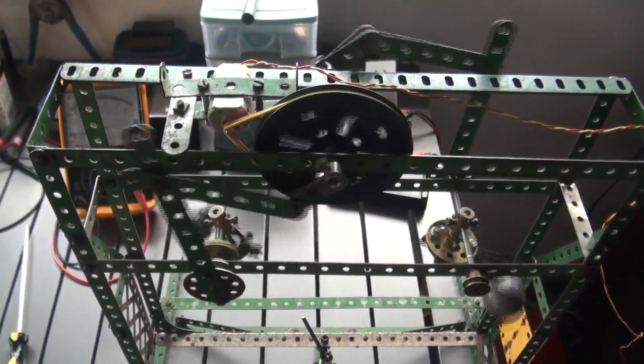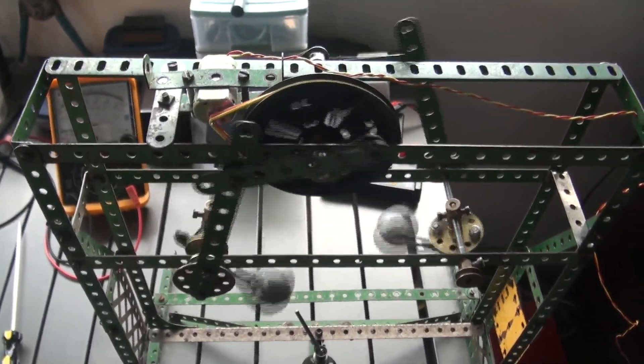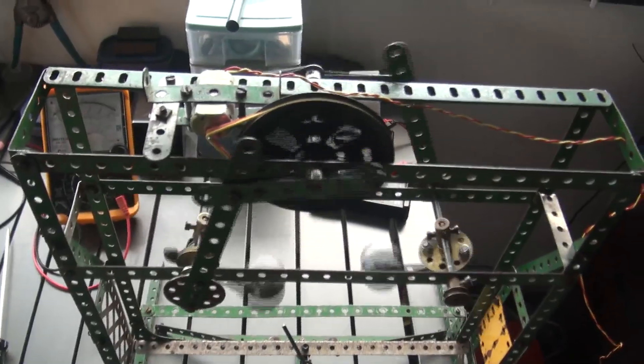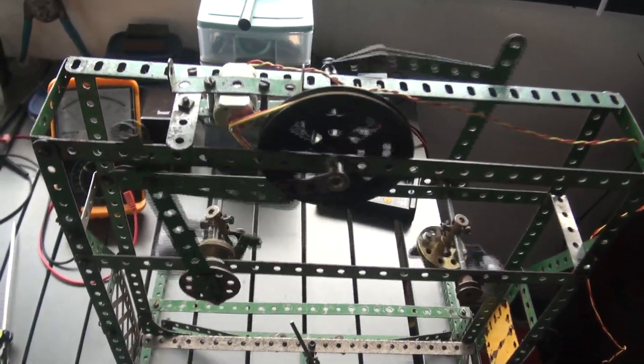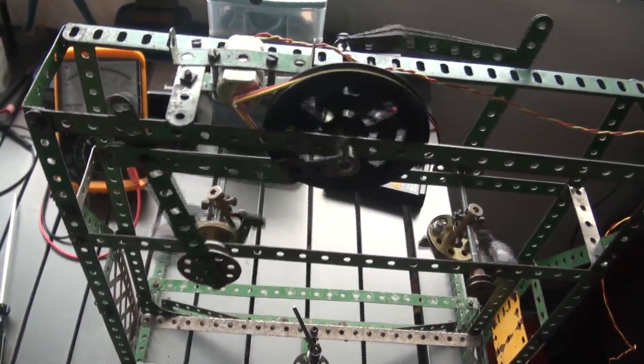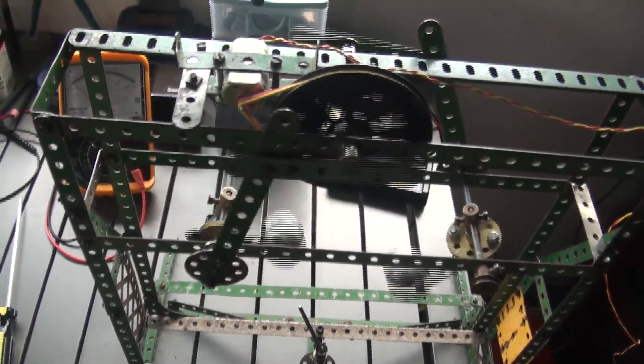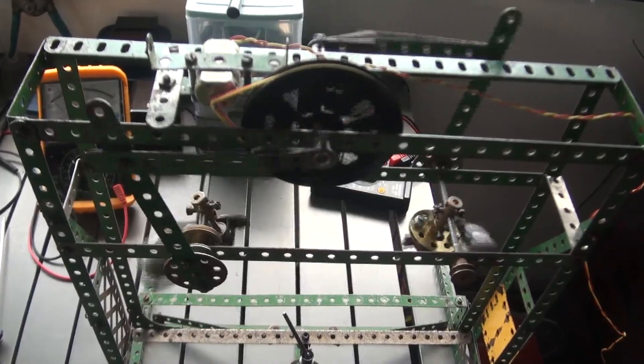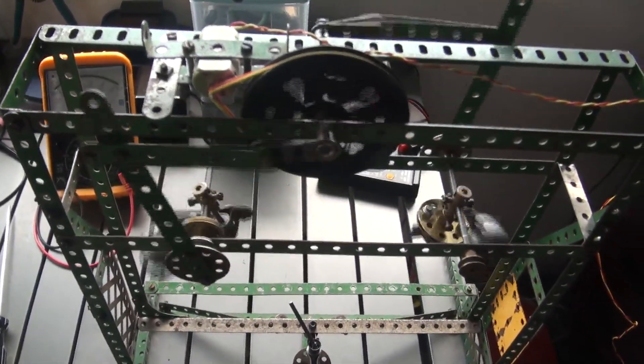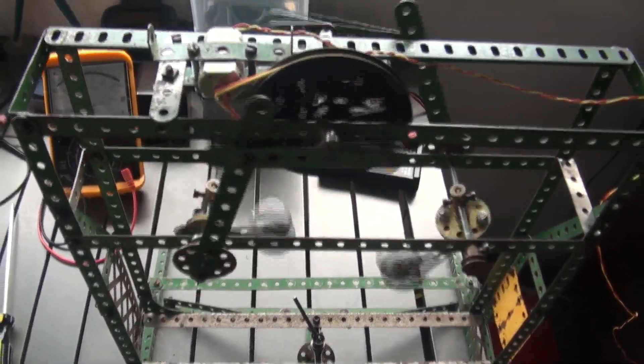This first clip shows two reciprocating elements being driven 180 degrees out of phase. The slow motion clip that follows shows that the lead weights are rising and falling in unison. There is no energy saving to be gained from this configuration.